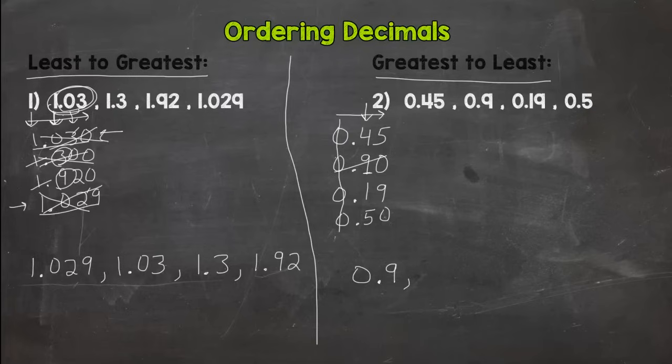Cross it off. Next a four, one, and a five, so this five would come next - the next greatest. Then we have a four and a one, so that four would be next, 0.45. Done. And then our last one would be 0.19, our least in value.